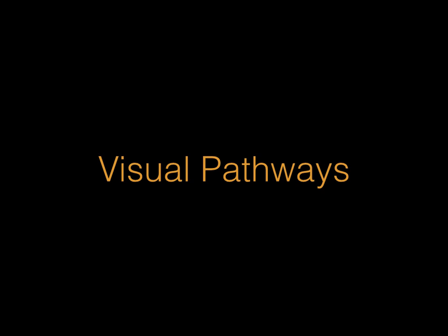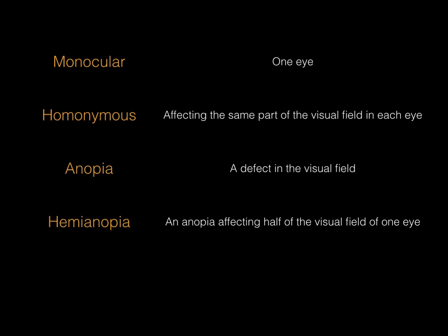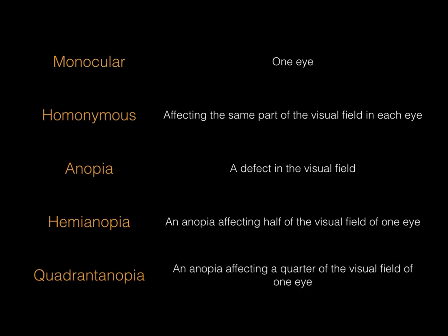Let's start by covering some important terminology. Monocular means one eye. Homonymous means affecting the same part of the visual field in each eye. Anopia means a defect in the visual field. Hemianopia means an anopia affecting half of the visual field of one eye, whilst quadrantanopia refers to an anopia affecting a quarter of the visual field of one eye.